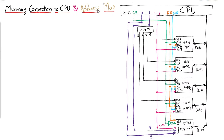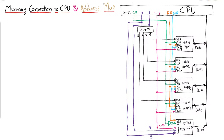Hello students, let us start our discussion. In the previous video we discussed what RAM chip is and how it works. Here we will discuss memory connection to CPU and address map. So first we will prepare the address map and then accordingly create the memory connection to the CPU.